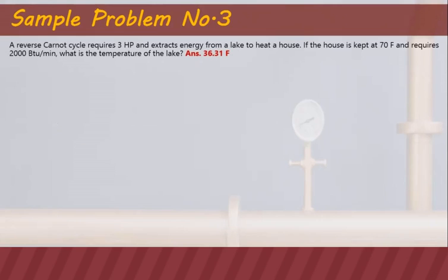Sample problem number three. A reverse Carnot cycle requires 3 horsepower and extracts energy from a lake to heat a house. If the house is kept at 70 degrees Fahrenheit and requires 2,000 BTU per minute, what is the temperature of the lake? Since the desired output is to heat the house, this reverse Carnot cycle is a heat pump.